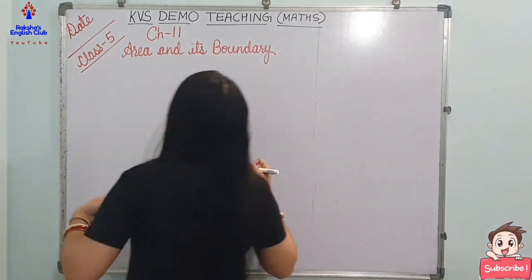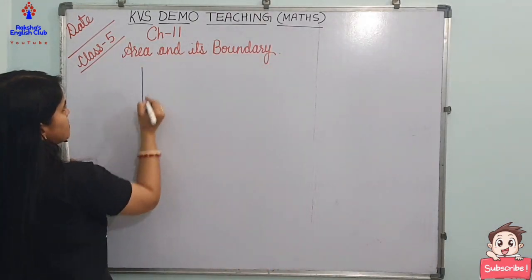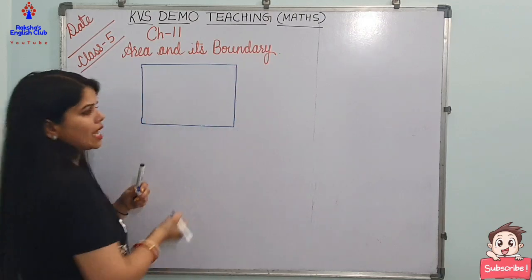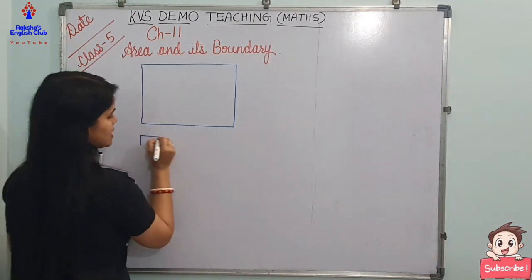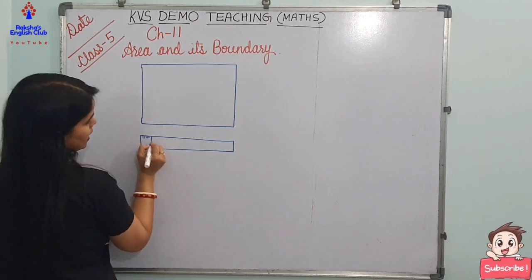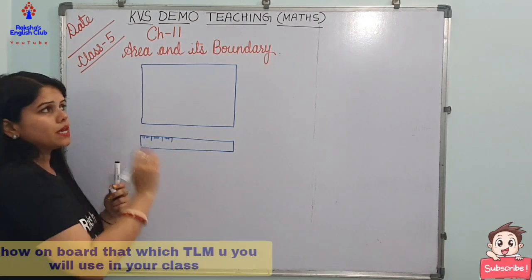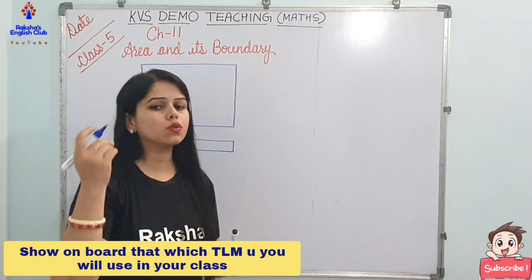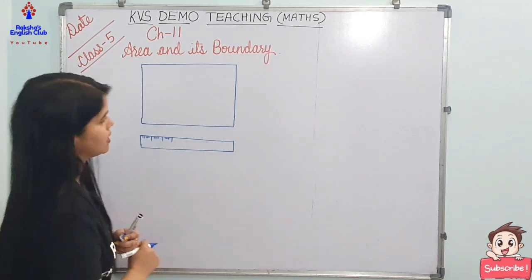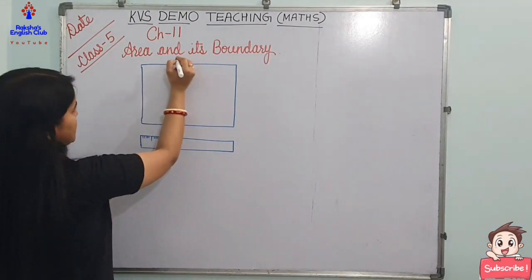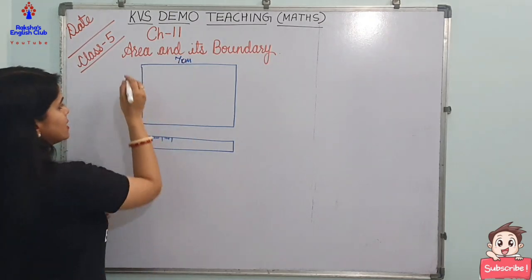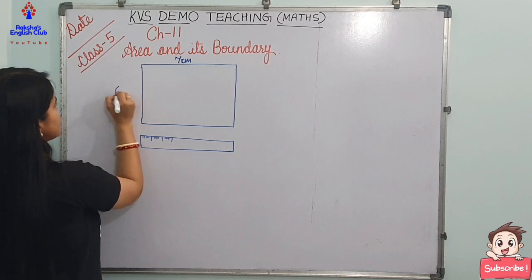I will tell you. I am having this piece of paper, and I will use a scale to measure its length and breadth. Who is going to help me to measure it? Take this scale, take this paper and quickly measure it. Anuj has measured — the length of this paper is 7 cm and the breadth of this paper is 6 cm.